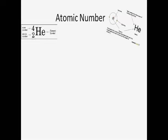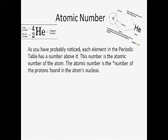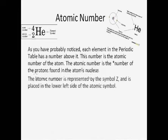The atomic number. As you have probably noticed, each element in the Periodic Table has a number above it. This number is the atomic number of the atom. The atomic number is the number of the protons found in the atom's nucleus. The atomic number is represented by the letter Z, and is placed in the lower left side of the atomic symbol.